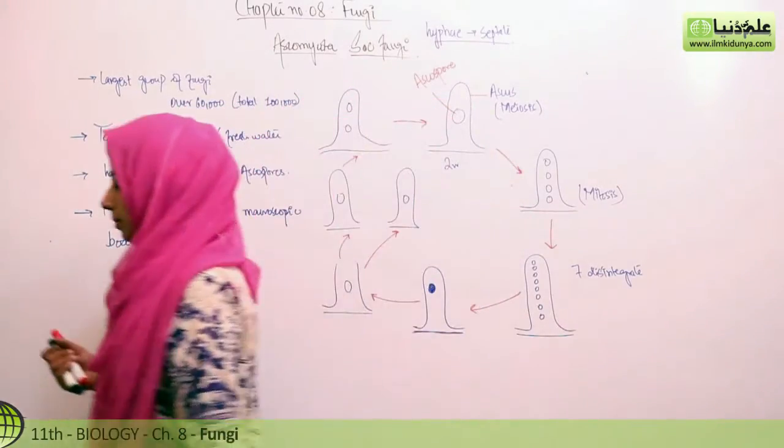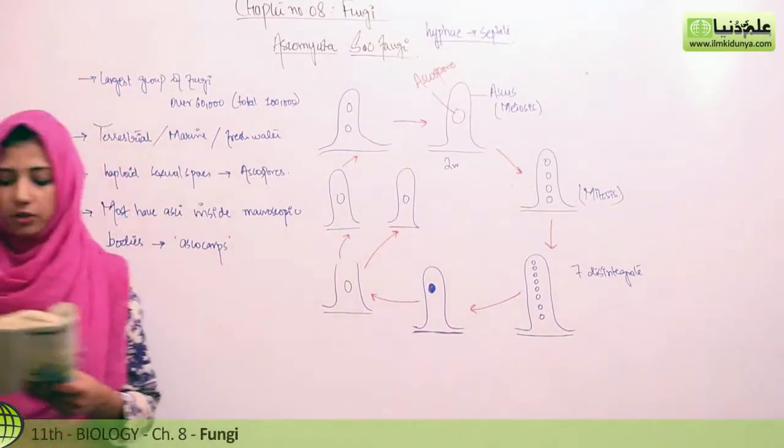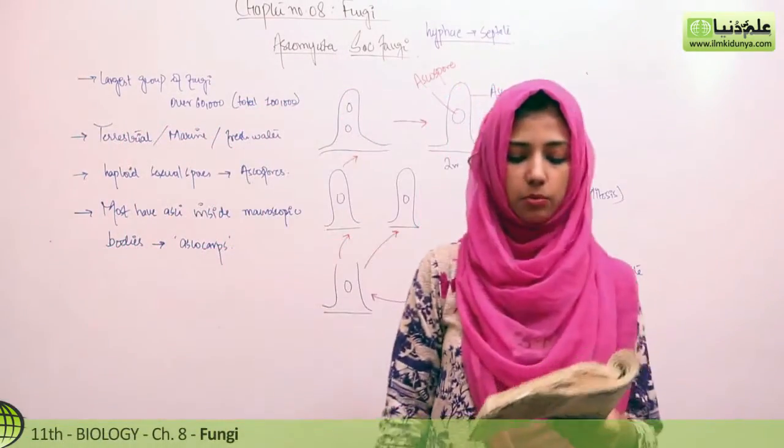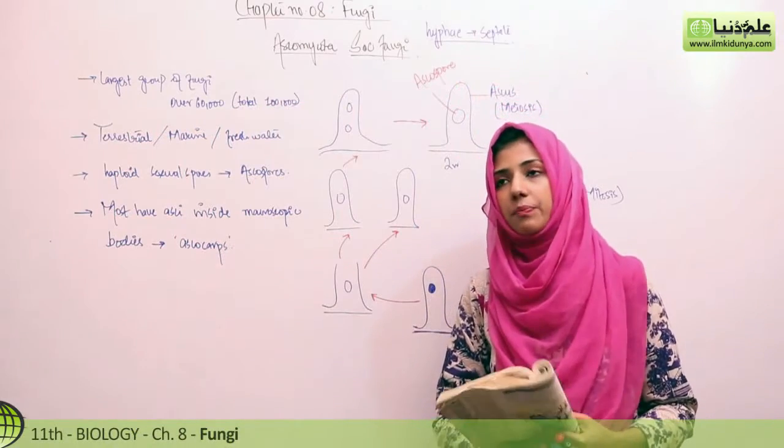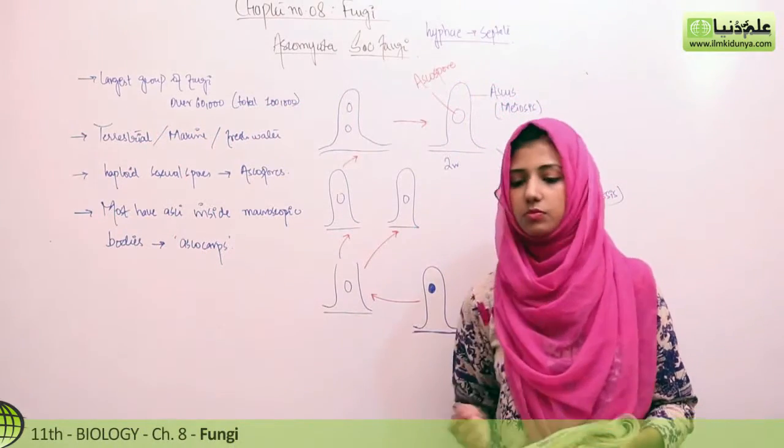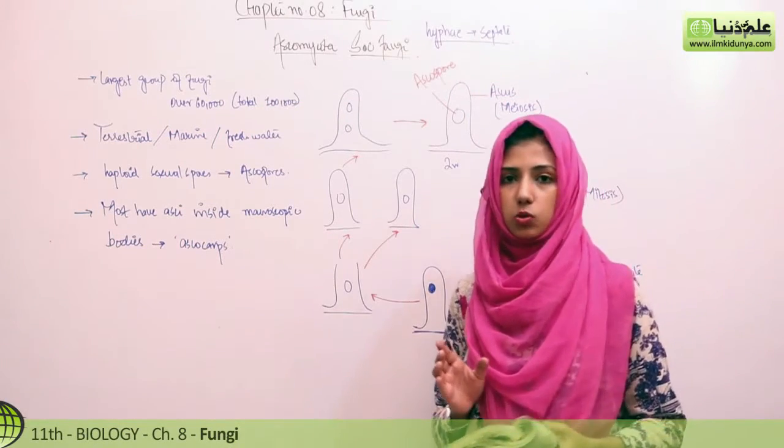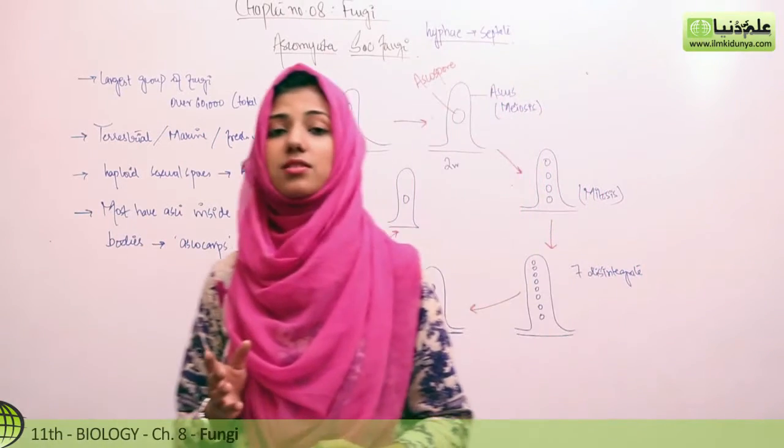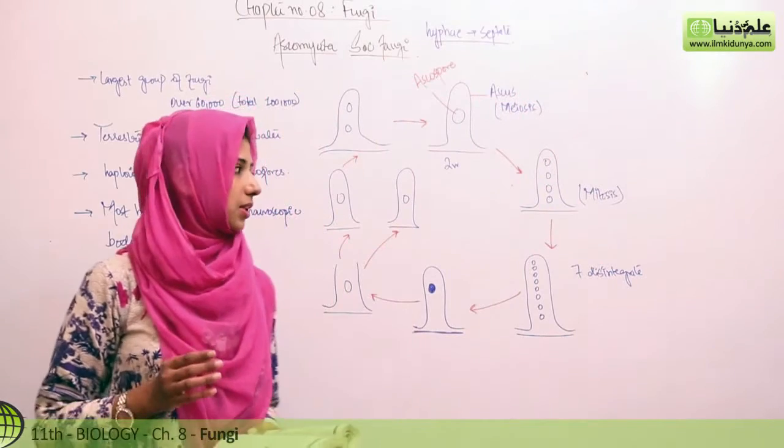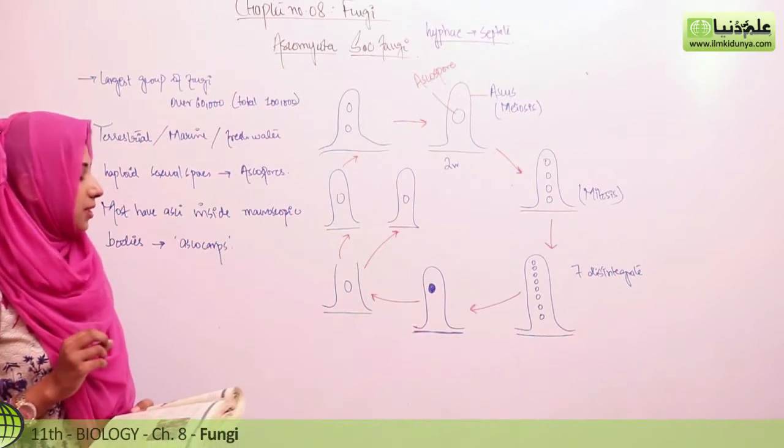For example, yeast is unicellular fungi derived from different groups including Zygomycota, Ascomycota, and Basidiomycota, but mostly from Ascomycota. Yeast is an important fungus, and we mostly see it in Ascomycota.